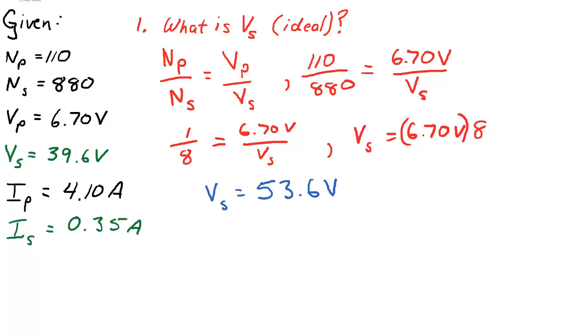However, we see experimentally that it's actually only 39.6 volts. There has been some losses due to heat, and perhaps the magnetic fields weren't 100% concentrated into the secondary windings. So 53.6 would be ideal, no losses. Let's look at the second question.